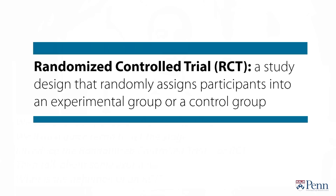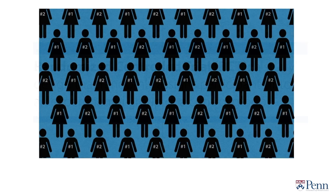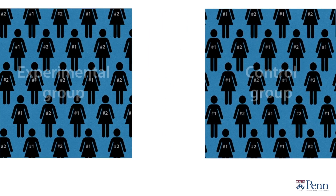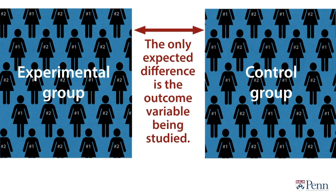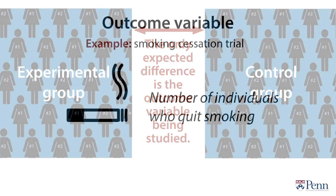What is the definition of an RCT? It is a study design that randomly assigns participants into an experimental group or a control group. The only expected difference between the control and experimental groups in an RCT is the outcome variable being studied — for example, the number of individuals who quit smoking in a smoking cessation trial.